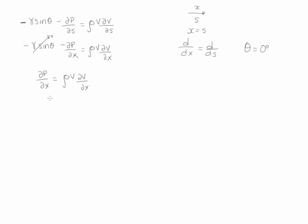Therefore, this becomes: dP/dx equals negative rho V dV/dx. To calculate the pressure derivative, we need to calculate the derivative of the velocity with respect to x. The velocity is equal to V₀ plus (a³/x³), and therefore the velocity derivative with respect to x is equal to negative 3V₀ a³/x⁴. This gradient is expressed with total derivatives because velocity is only a function of x.